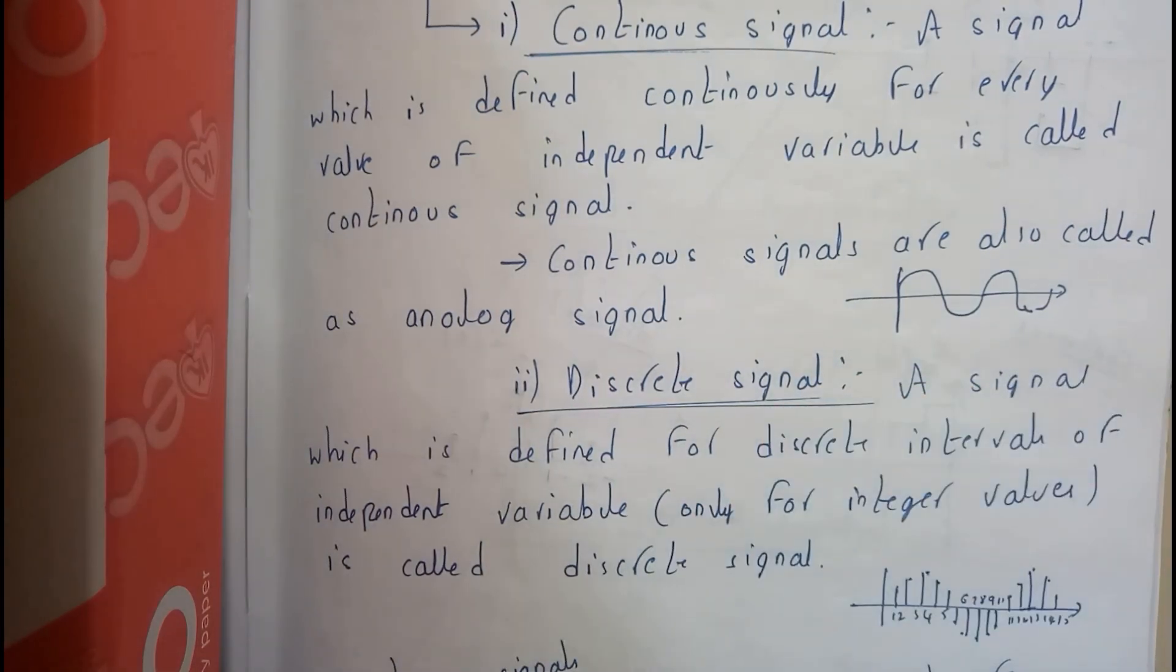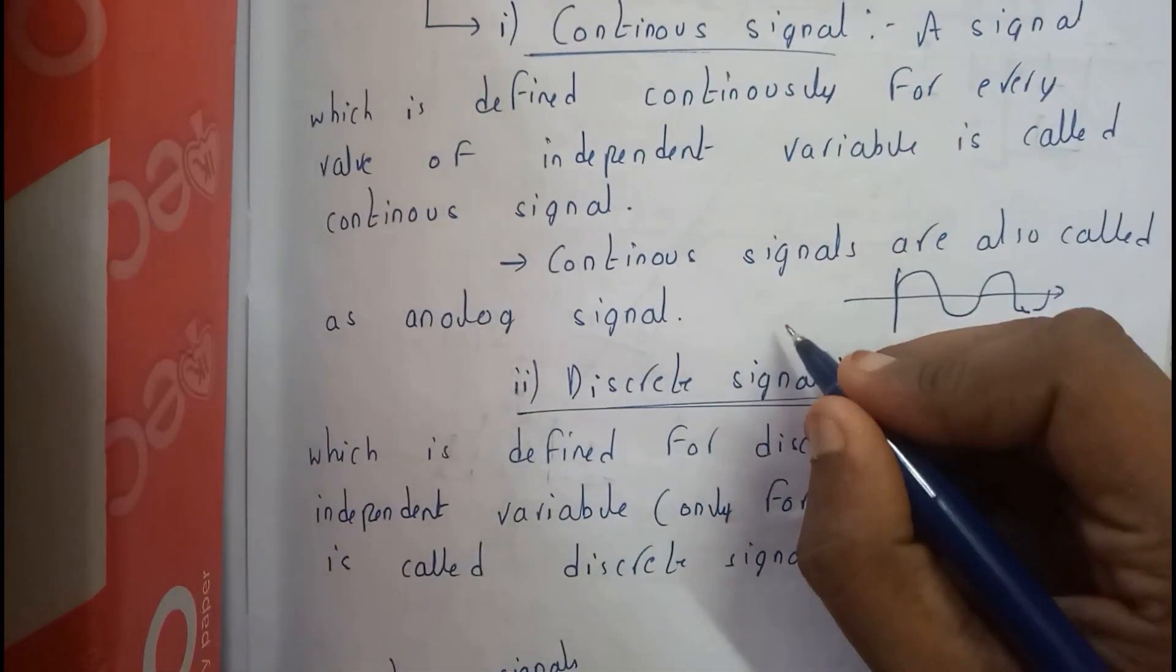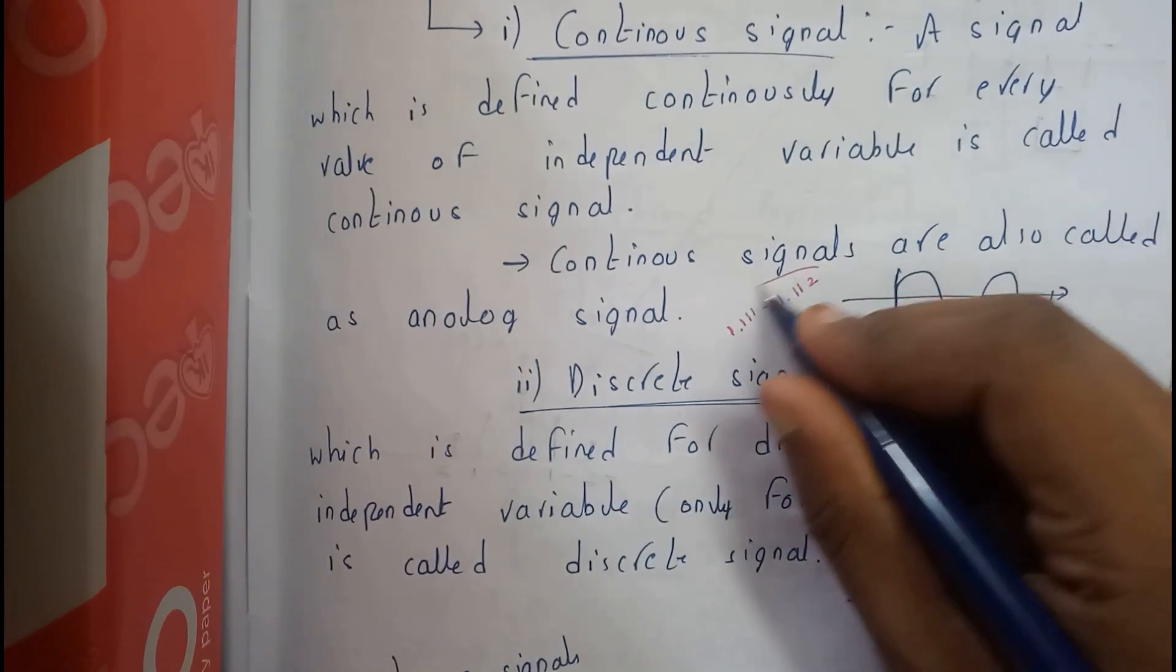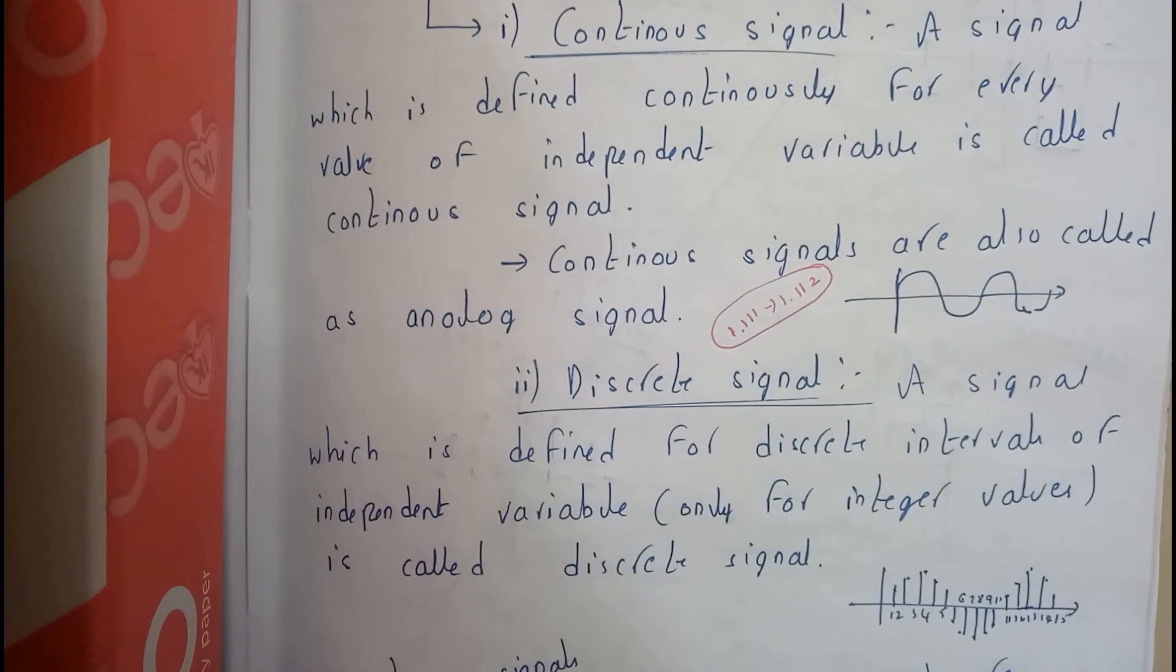There will be values for every particular thing. It will have a value for this and it also has a value for this. Every minute thing will have values.